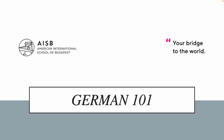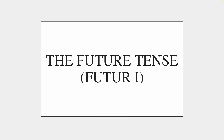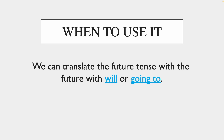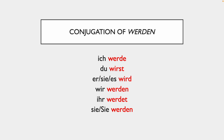Welcome to German 101 at AISB. This video is about the future tense in German, Futur Eins. In German we use the future tense exactly the same way that we use the future tense in English, except that in English we use the words 'will' or 'going to', but in German we use the verb 'werden'. And this is the conjugation of 'werden'.